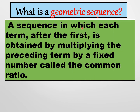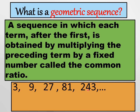Now we're going to talk about geometric sequences. A geometric sequence is a sequence in which each term after the first is obtained by multiplying the preceding term by a fixed number called the common ratio. For example, in the sequence 3, 9, 27, 81, 243, and so on — the values increase quickly. To get 9, we multiply 3 by 3; 9 times 3 equals 27; 27 times 3 equals 81; and 81 times 3 equals 243. That fixed number, 3, is what we call the common ratio.